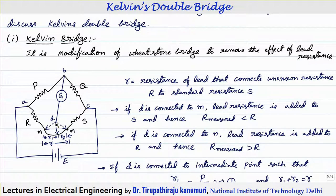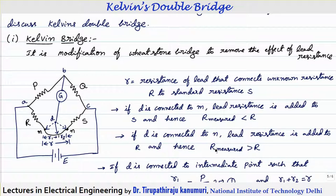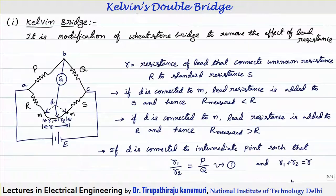If galvanometer point D is connected to the unknown resistor terminal, then the entire lead resistance r will be connected as part of the standard resistance. Since this resistance is included but not considered, the measured value of resistance will be less than the actual value. Alternatively, if point D is connected to the standard resistor terminal N, then this lead resistance will add to R, making the measured resistance equal to R plus small r — greater than capital R. So in both cases, we are getting error.